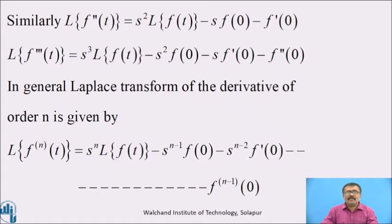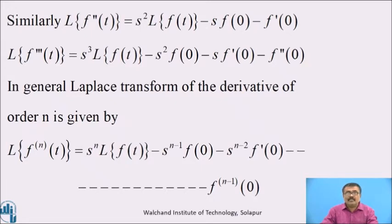Similarly, L{f''(t)} = s²·L{f(t)} − s·f(0) − f'(0). And L{f'''(t)} = s³·L{f(t)} − s·f(0) − s·f'(0) − f''(0). In general, L{f^(n)(t)} = s^n·L{f(t)} − s^(n−1)·f(0) − s^(n−2)·f'(0) − ··· − f^(n−1)(0).